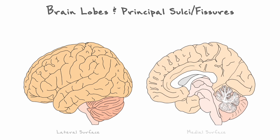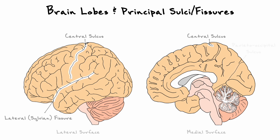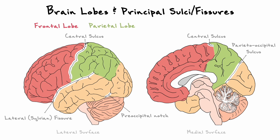Considering the lateral and medial view of the brain, there are 4 principal frontiers very characteristic of the human brain: the central sulcus, the lateral or sylvian fissure, the parietal occipital sulcus, and the preoccipital notch. As a side note, a sulcus and a fissure represent the same thing, but a fissure is much deeper. Altogether, these 4 frontiers divide the cortex into 4 general lobes. The central sulcus divides the frontal and parietal lobes, and the lateral fissure divides the temporal from the frontal and parietal lobes. The parietal occipital sulcus and preoccipital notch somewhat arbitrarily separate the occipital lobe from the parietal and temporal lobes.